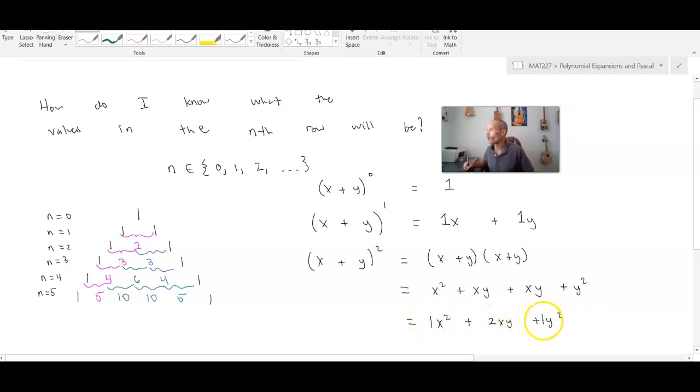Where these coefficients are one and once again it looks like these coefficients for the first and last terms are both ones and then the inner term has a coefficient of two. So we're already beginning to think that there is some connection between expanding polynomials and Pascal's triangle.